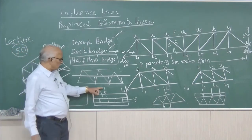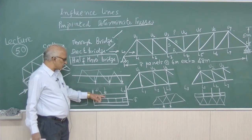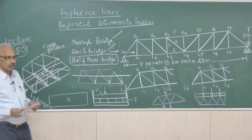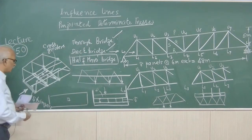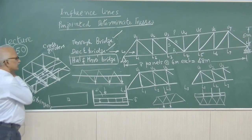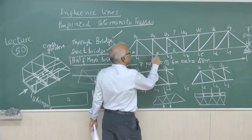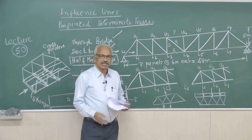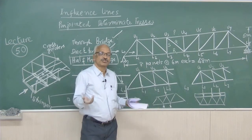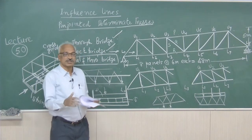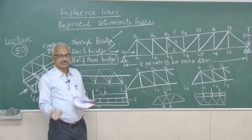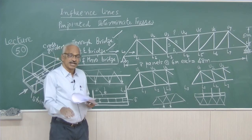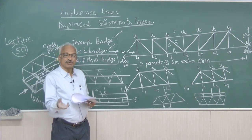The load transfer mechanism: from the wheel load to the deck slab, deck slab to stringer beams, stringer beams to cross girders, cross girders to trusses on either side. When the load position changes, the member force will also change — some tension members will become compression members and compression members will become tension members. How to draw the influence line diagram, and using it for a given system of loading, how to find out the maximum force in the member.